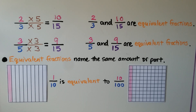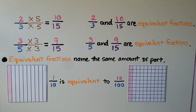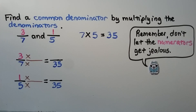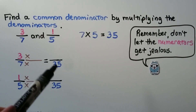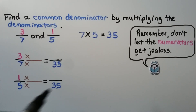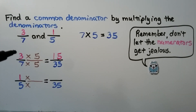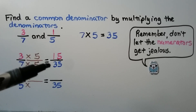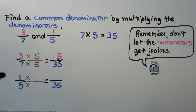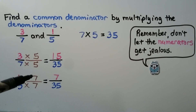Equivalent fractions name the same amount or part — like 1/10 is equivalent to 10/100; they're naming the same amount of the model. To find a common denominator by multiplying the denominators: we have 3/7 and 1/5. We multiply 7 times 5, which is 35, so that's our common denominator. We ask: 7 times some number is equal to 35 — that would be 7 times 5. We multiply the numerator times 5 and get 15, so 15/35 is equivalent to 3/7. For 1/5, we think 5 times some number is 35 — that would be 7. We multiply the numerator by 7 so it doesn't get jealous, and we have 7/35 as an equivalent fraction.